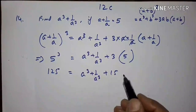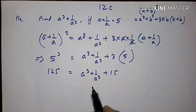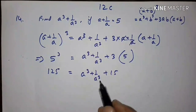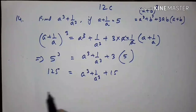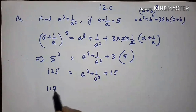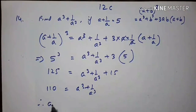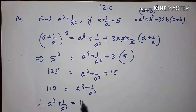When 15 comes to the left, it becomes minus 15. So 125 minus 15 equals 110. Therefore, a cubed plus 1 upon a cubed is equal to 110.